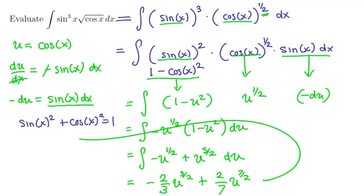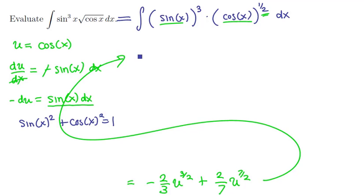Now to back substitute, we're going to need some room, so let's put it up here. Back substituting, we'll get us a negative two-thirds u, or cosine of x, raised to the three-halves power, plus two-sevenths times the cosine of x raised to the three-halves power, to the seven-halves power.